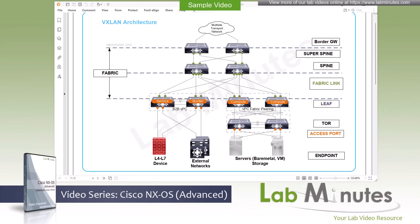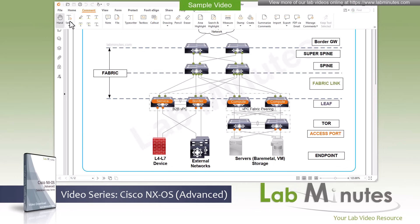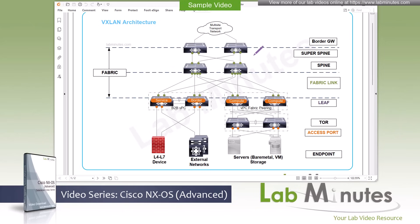Let's start by discussing VXLAN architecture and its components. I'm going to use this diagram right here to assist the explanation. A VXLAN-based network is built upon a three-stage Clos network that consists of a layer of spine switches and a layer of leaf switches. Spines connect to all leaf switches to provide a high-speed transit backbone network.